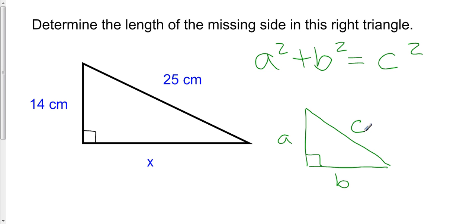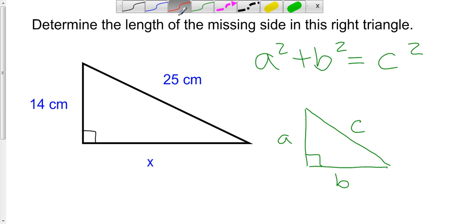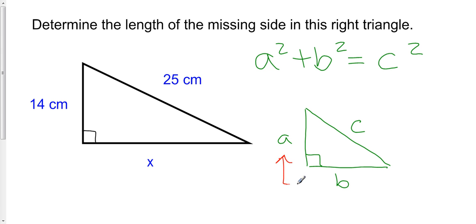In this case we know what the hypotenuse is, so it's a different type of problem. In another video I showed you how to find the hypotenuse if you were missing it. The other two sides of a right triangle are known as the legs — here we have A and B — and this is the hypotenuse.